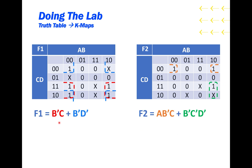That covers the 1s on both K-maps and allows us to share two gates — one between the orange group and the blue group, and one between the red group and the green group. Writing the functions out: the red group shares the B̄C gate, and the blue group shares the B̄D̄ gate. So from 18 AND gates, we're now down to 4 due to sharing and reduction. Now that we have a much more manageable circuit size, we can move on to CircuitJS or your physical lab to start wiring it.